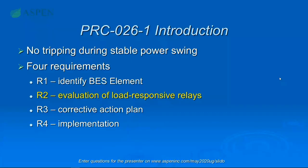The gist of the PRC-26 standard, which is now being enforced, is: if you are the owner or operator of a bulk electric system component — transmission line, generator, or transformer — you are required to prove that your protection will not trip those elements during a stable power swing. There are four requirements; what we'll focus on today is R2: evaluating the load-responsive relays that you have in your one-liner model to see if they will meet the PRC-26 criteria.